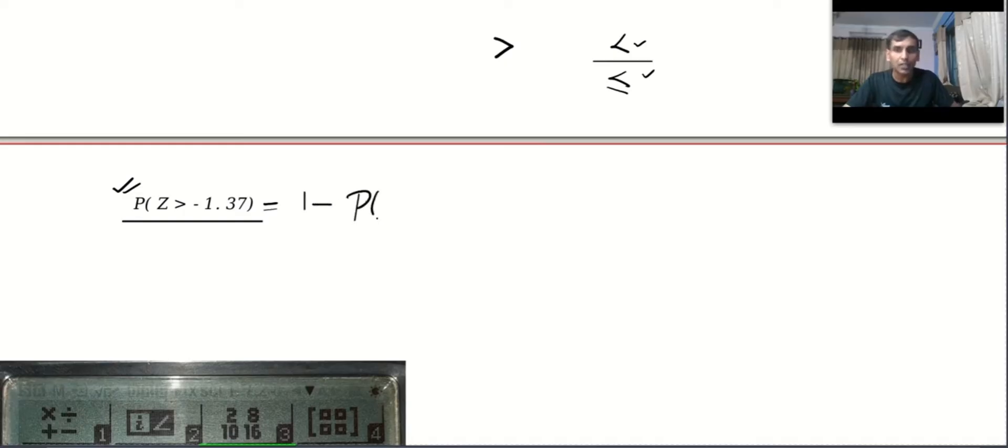And that's very simple. All you have to do is 1 minus probability z less than or equal to minus 1.37. You can check our videos on normal distribution, you will understand why I did this. Now this is nothing but 1 minus the cumulative value from minus infinity to minus 1.37.